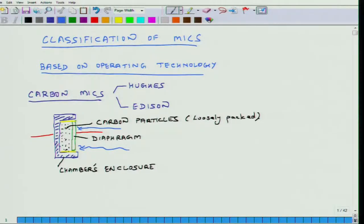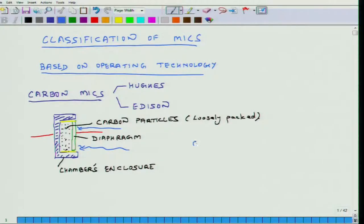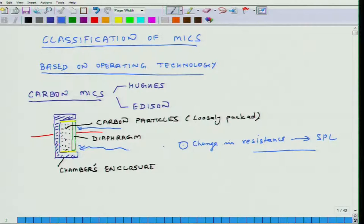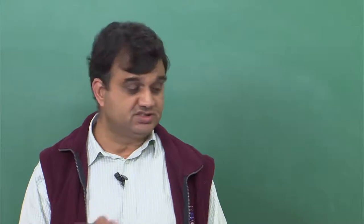The current which flows through this whole setup also changes. You sense the change in resistance, or through sensing current or voltage difference across it, and that you convert into SPL. Change in resistance is mapped into SPL. That is why these were known as carbon microphones — they were based on the resistive principle, sometimes also called resistance microphones. The fundamental property varying here was the resistance of the system.